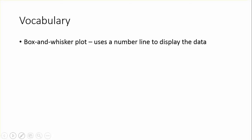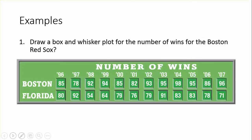For the first example, we're going to draw a box and whisker plot for the number of wins for the Boston Red Sox. The first thing you want to do is write the data in order, because we need to find the median, the lower and upper quartiles, and the minimum and maximum values.